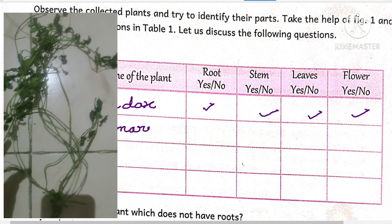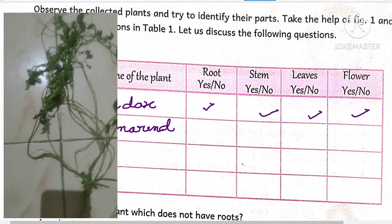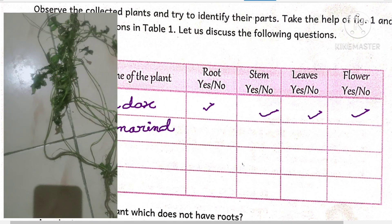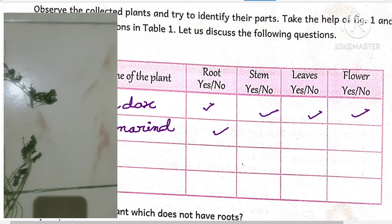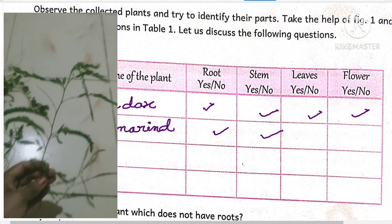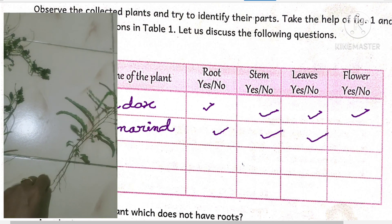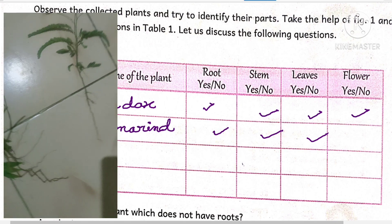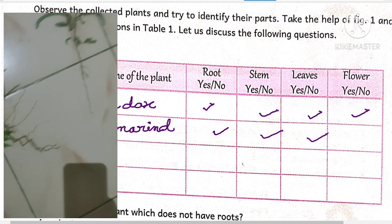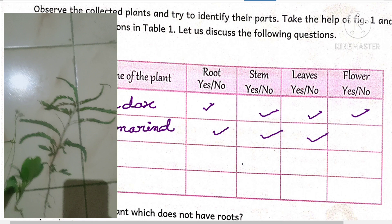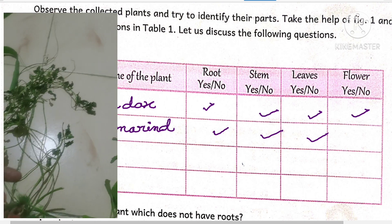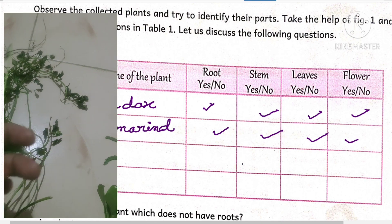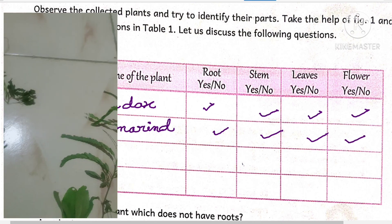The next one is a tamarind tree, locally called 'chintapandu,' which has a sour taste. Does it have roots? Yes. Does it have a stem? Yes. Does it have leaves? Yes. In this video I took a very small tamarind tree, and this particular plant did not have flowers, but generally tamarind trees do contain flowers.